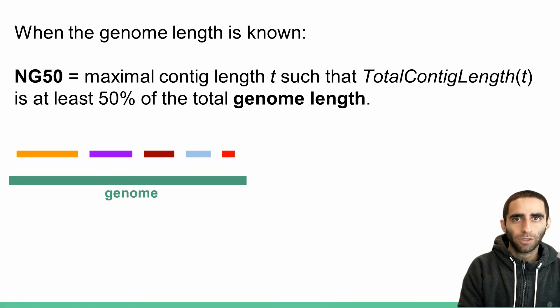If we have an estimate of the true genome length, we can instead compute the NG50 metric. It's essentially the same as the N50 metric, but instead of comparing against the sum of the contig lengths, we are comparing against our estimated length of the genome.